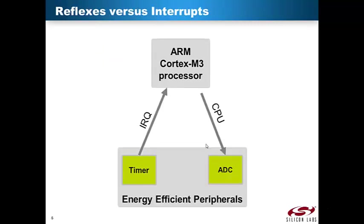The traditional approach for interaction between peripherals is to use interrupts. This example shows a timer that is used to trigger periodic A-to-D conversions. Once per sample period, the timer will generate an interrupt to the CPU. Then the CPU must process the interrupt and start the A-to-D converter. There are several disadvantages with this method. If the CPU is asleep, it must wake up before the interrupt request can be processed. And if the CPU is already busy processing another interrupt, it must finish this before the timer interrupt can be processed. In both these situations, the latency from the timer to the conversion is affected, resulting in jitter on the sampling frequency.